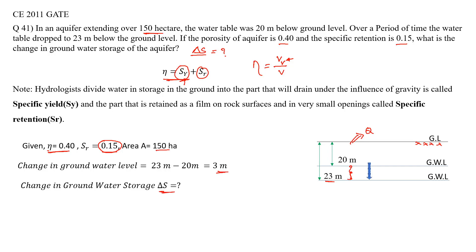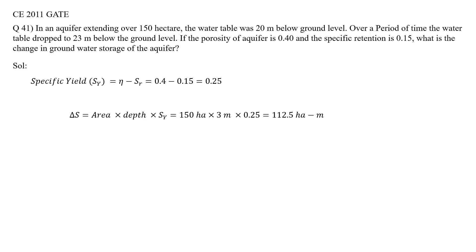Now we need to calculate delta S. You know η = Sy + Sr, so you need Sy, which equals η minus Sr, giving 0.4 minus 0.15 equals 0.25.